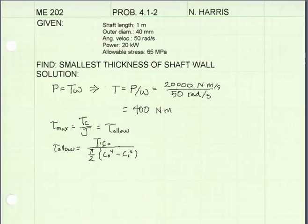T is the applied torque. C is the outer radius of the shaft. Our polar moment of inertia for a hollow shaft is pi over 2 times the outer radius to the 4th power minus the inner radius to the 4th power. Now we will solve this equation for inner radius.